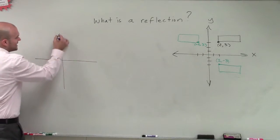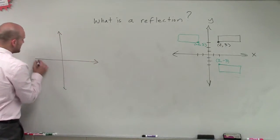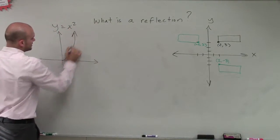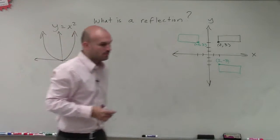Now, by using this understanding, if I have the parent graph of a quadratic, y equals x squared, we know it's going to look something like this. Pretty close, right?